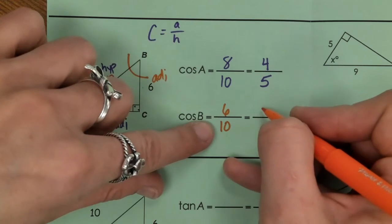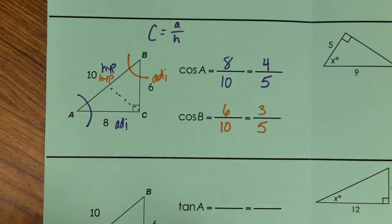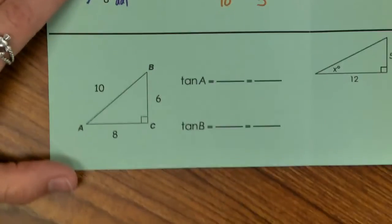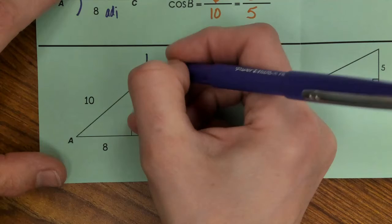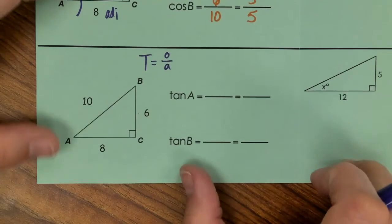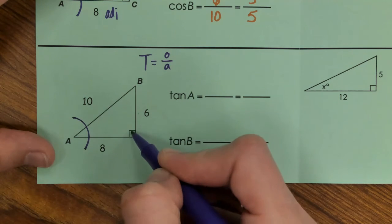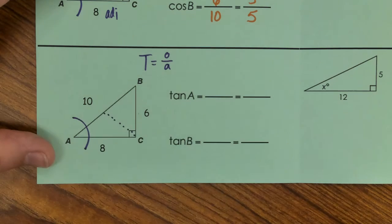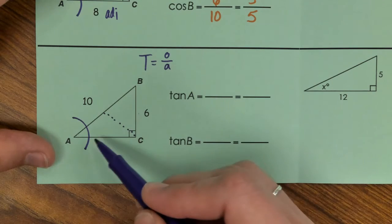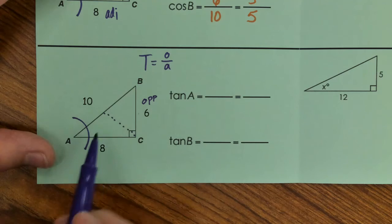Your tangents. We remember that tangent is opposite over adjacent. Starting at reference angle A, we want to make sure that we understand where our hypotenuse is. We need our opposite which is going to be over here at the 6, and we need our adjacent.